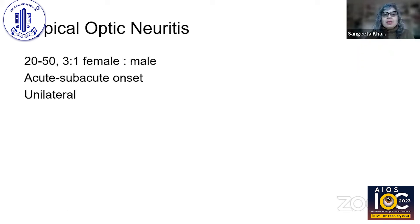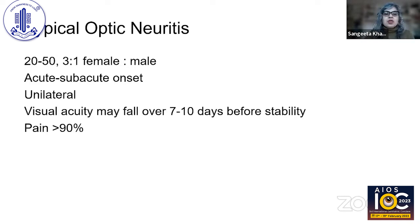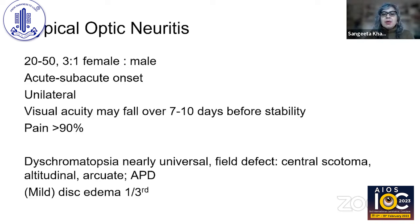Let's begin with what is typical optic neuritis. A typical presentation would be a woman in the age range of 20 to 50, though males can also have it but less commonly. It's an acute or subacute onset of vision loss that is unilateral, and the vision can fall over seven to ten days before stability. It's often painful with pain on eye movements.